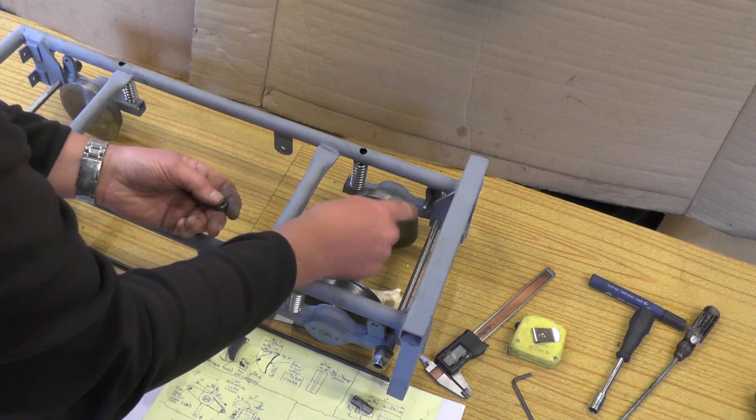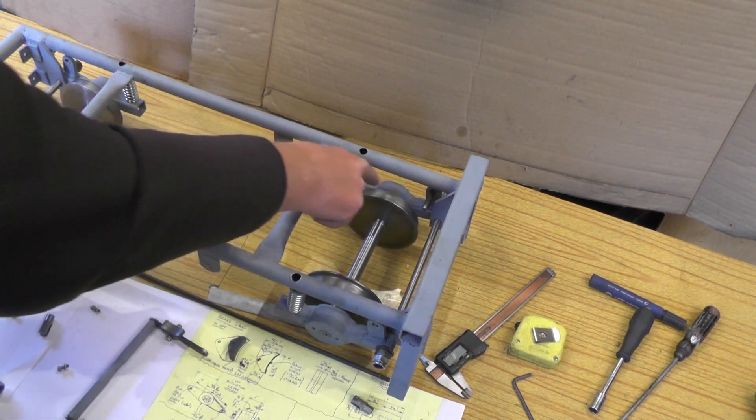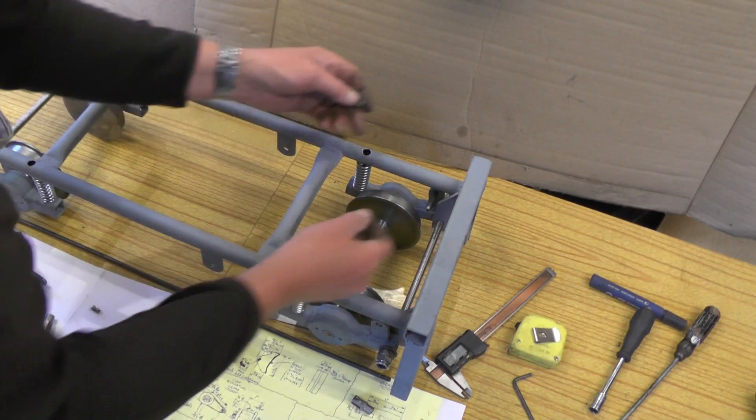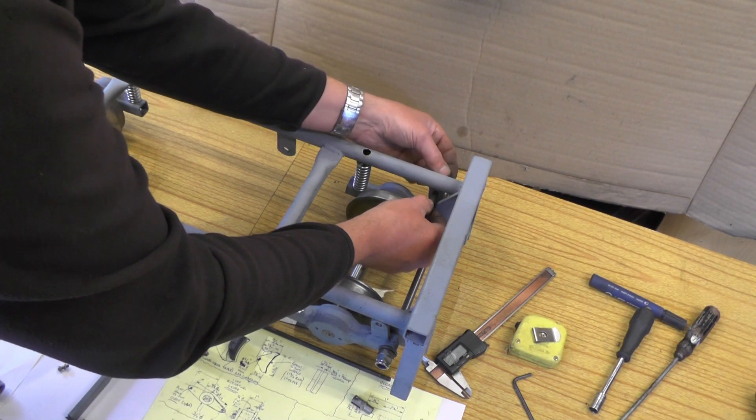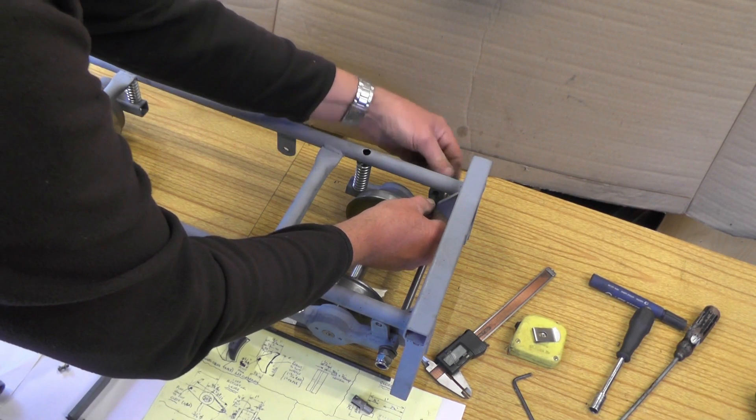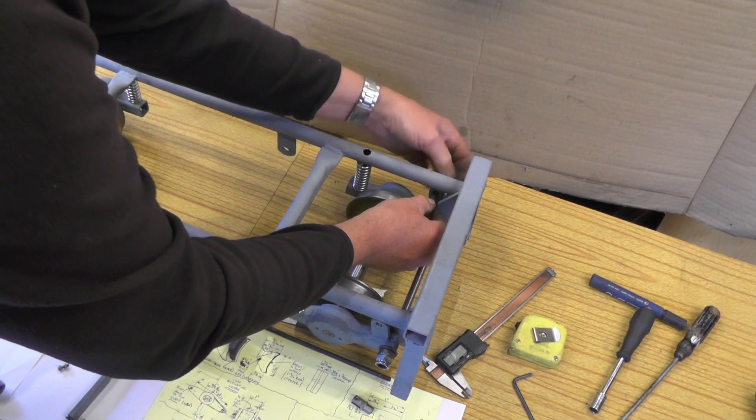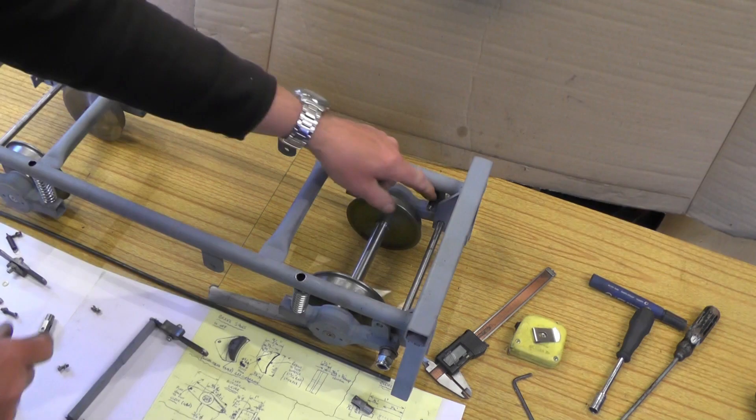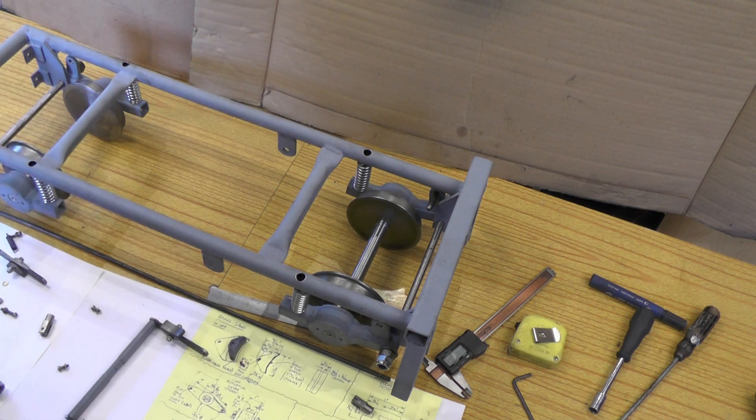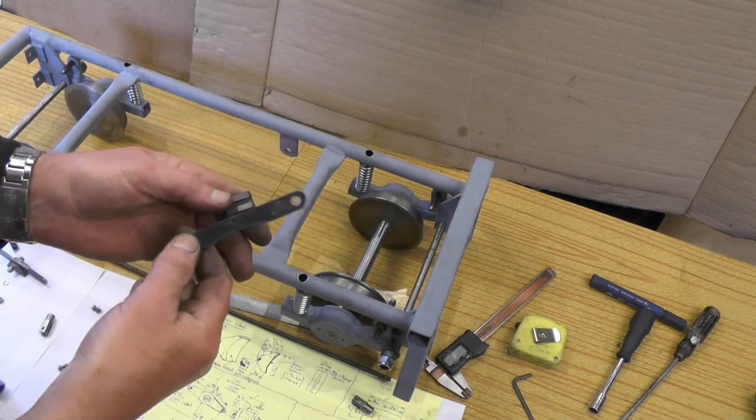That enables you to adjust them to get them central into position. And then when you've got them in position, you just put a nut on to lock that stud in position. So there's going to be one of them in each corner. Then you can put the brake blocks...